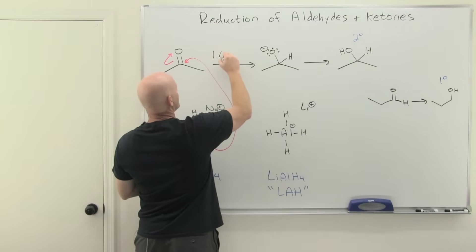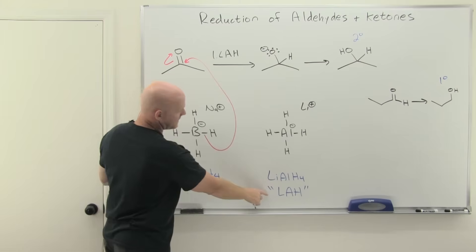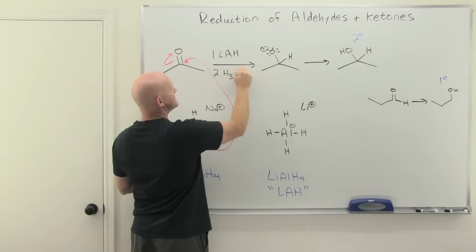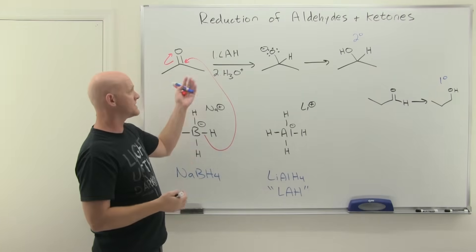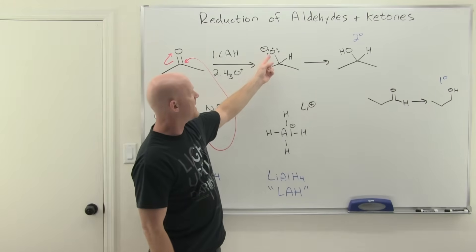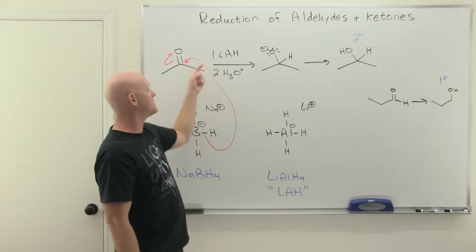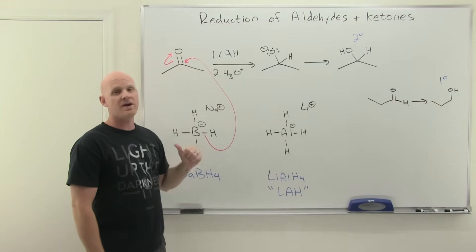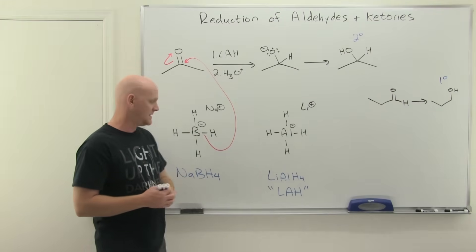That means we have no source to protonate the alkoxide if we use lithium aluminum hydride. So you've got to do an acid workup step just like we did with the Grignard reaction. Your alkoxide gets protonated by a hydronium ion in a separate step. That's the way it works with LAH.